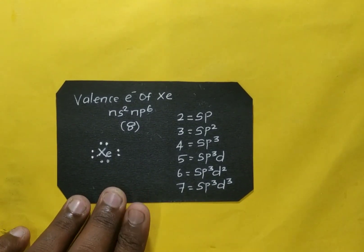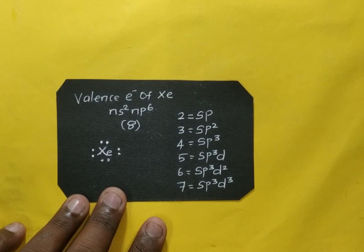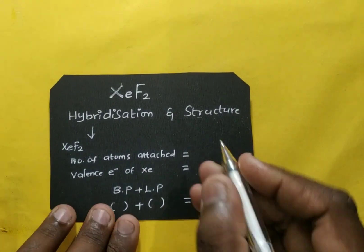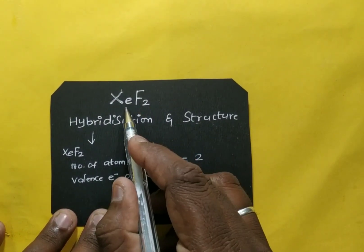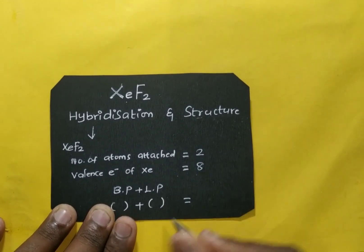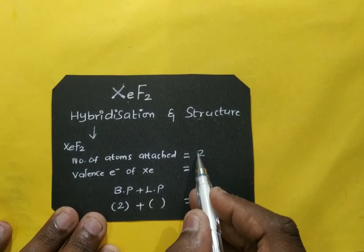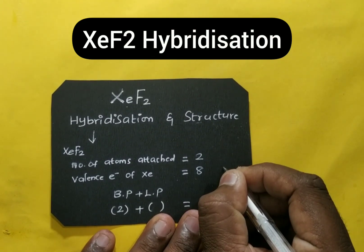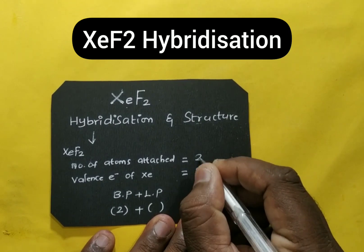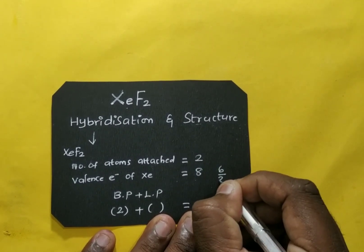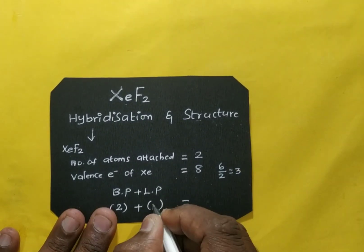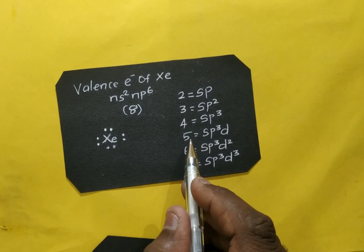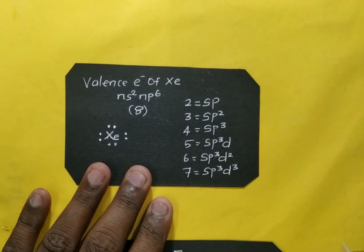Applying this to xenon difluoride (XeF₂): number of atoms directly attached to xenon is 2, so bond pair = 2. Valence electrons of xenon = 8; remaining electrons = 8 − 2 = 6; lone pairs = 6 ÷ 2 = 3. Total = 2 + 3 = 5, so hybridization is sp³d.